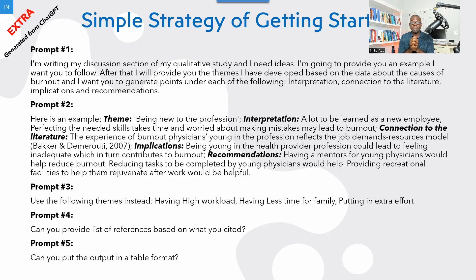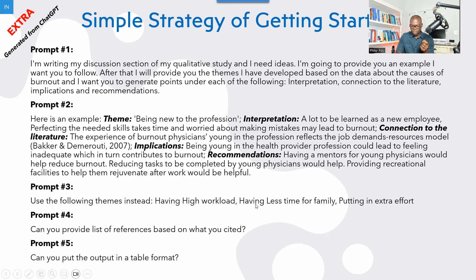This is so important — in order to get a very good outcome, you can provide ChatGPT an example. So the second prompt gives an example: I provided a theme, my interpretation, a connection to the literature, implication, and recommendation, and then I told the system to follow this example and do the rest of the themes for me.